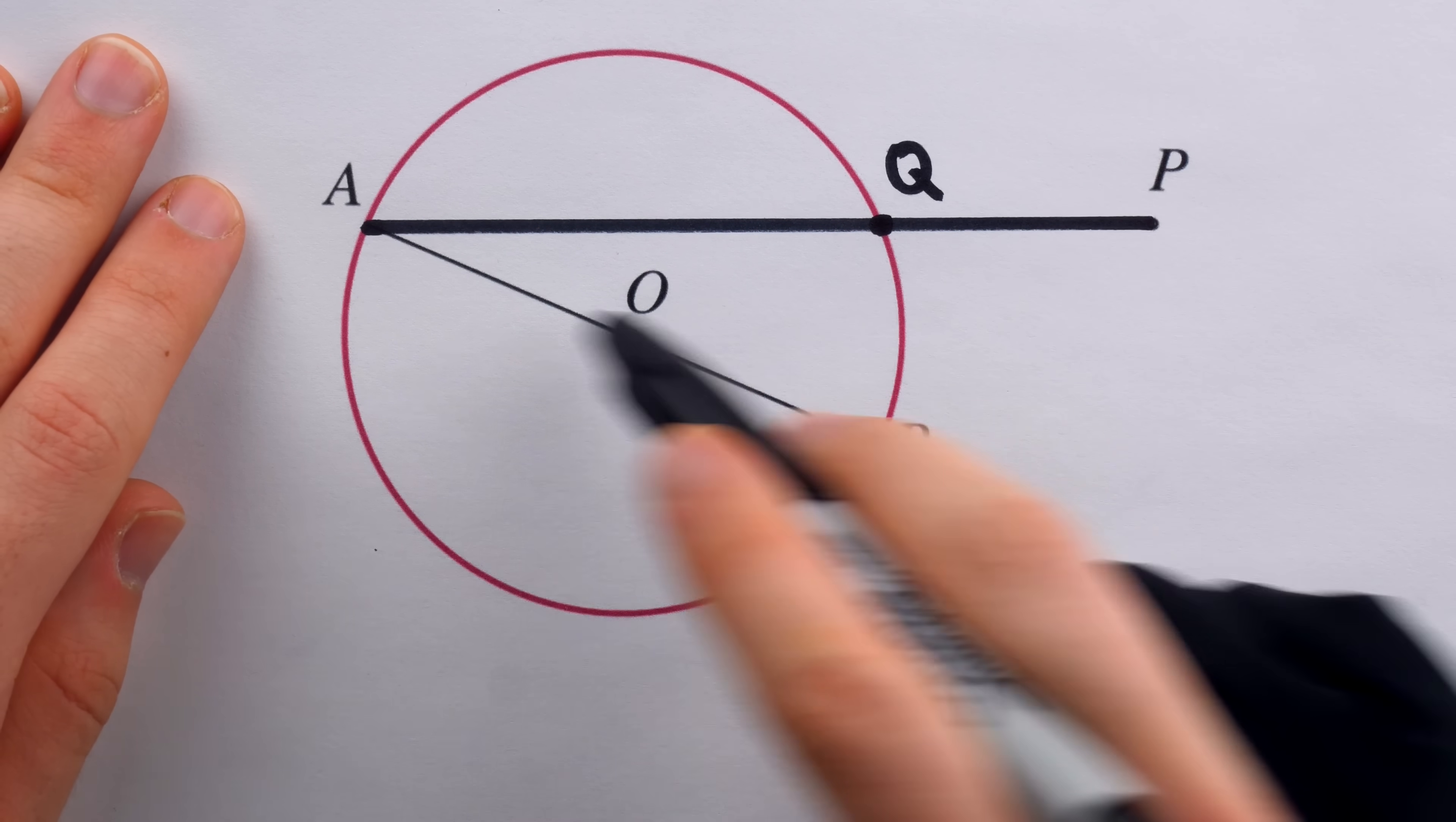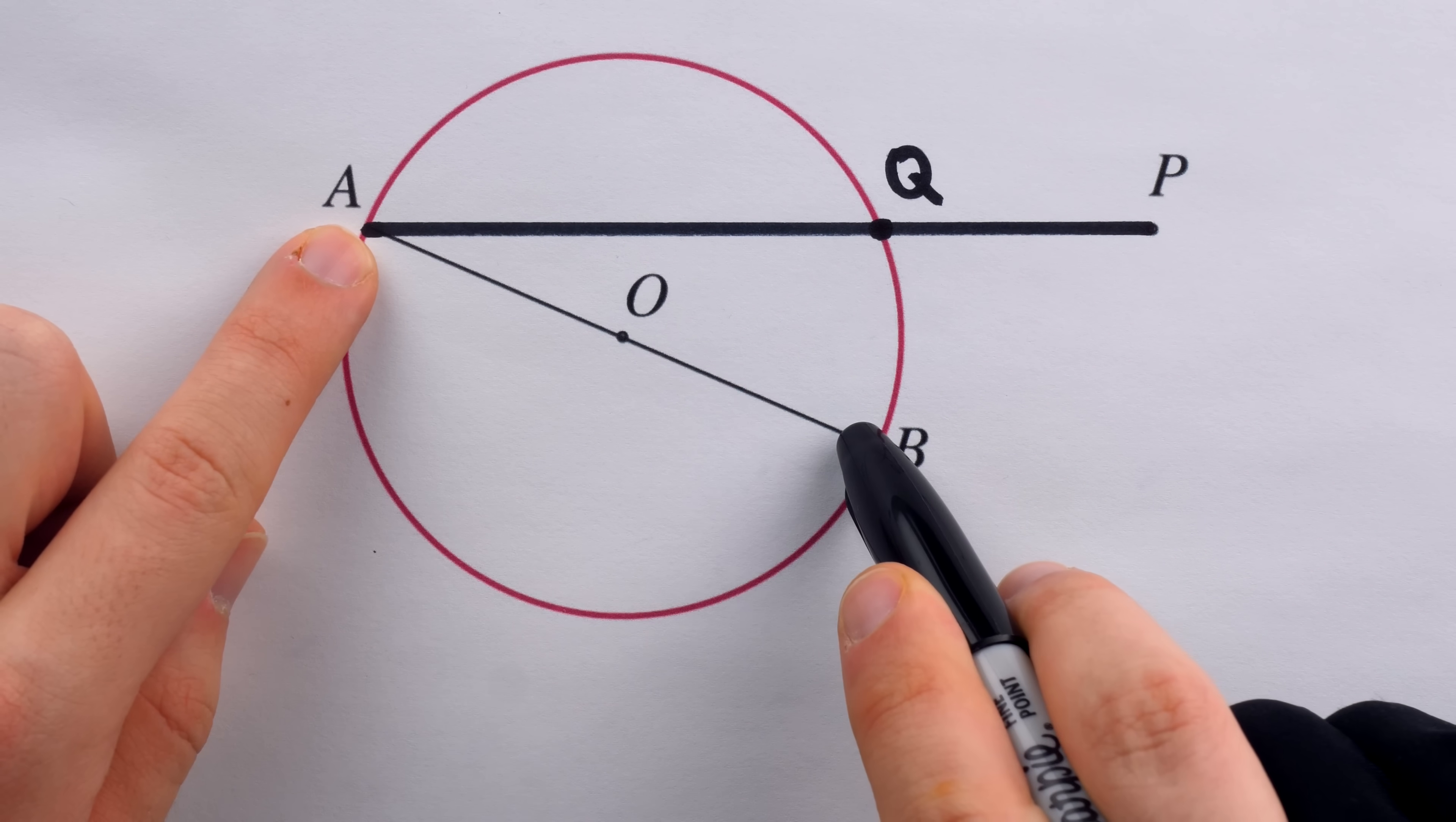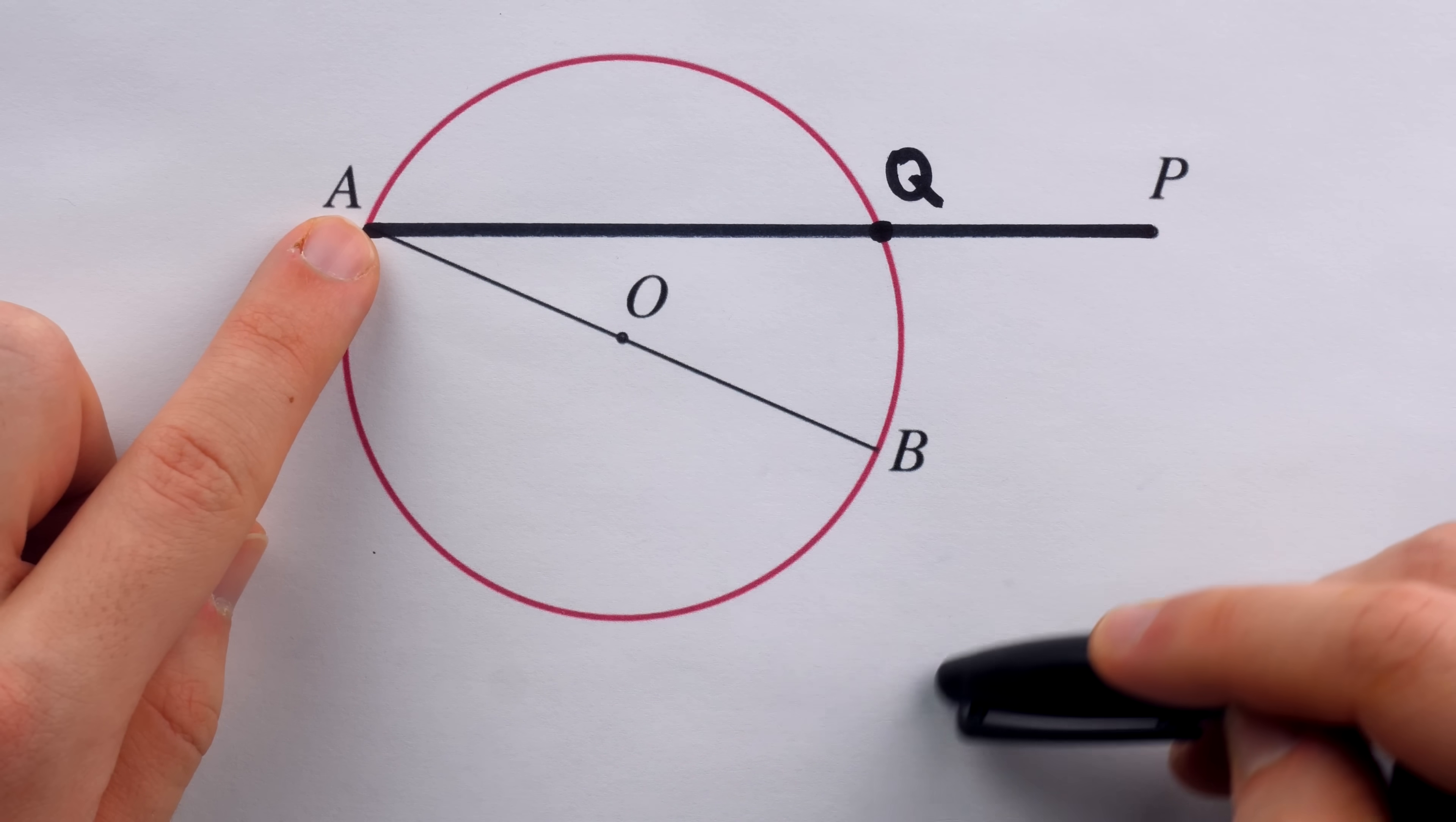The gist of the strategy here is that we're going to construct a triangle so that our line through P is one side of the triangle and AB is part of the altitude of the triangle, which must be perpendicular to that line through P.